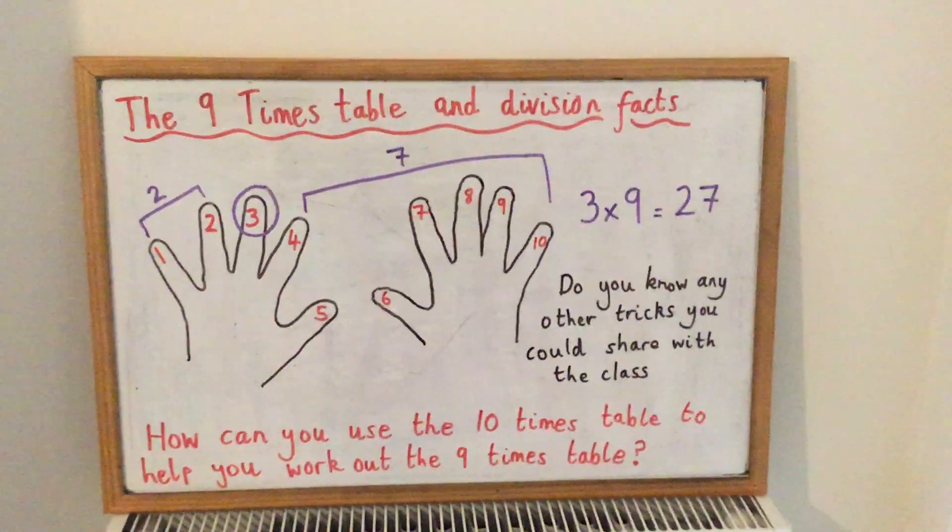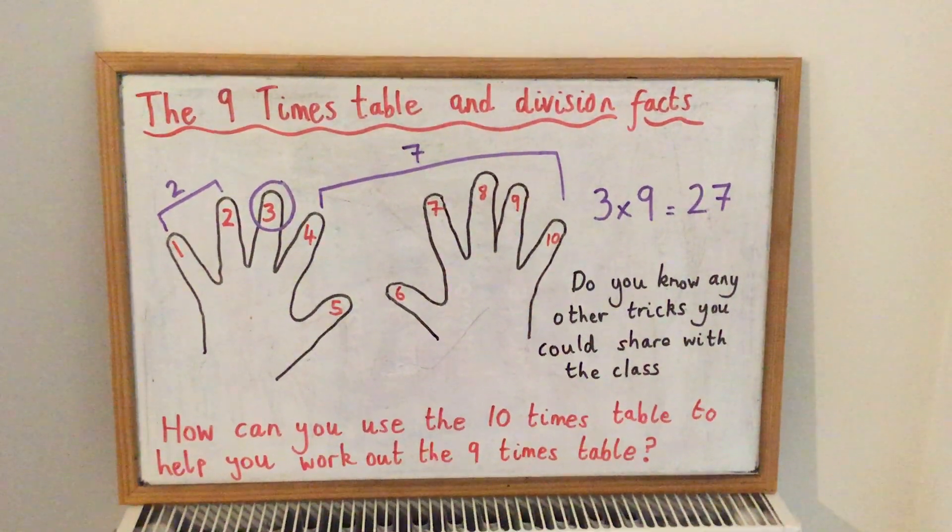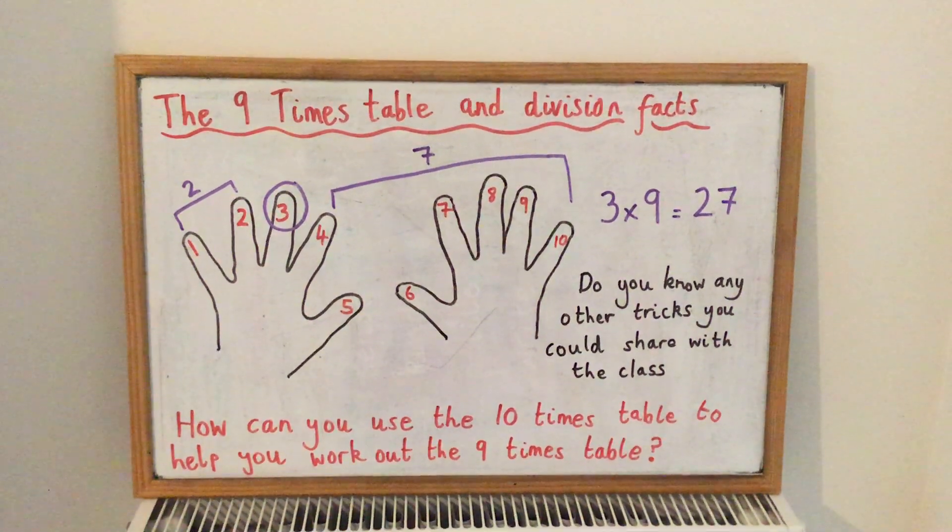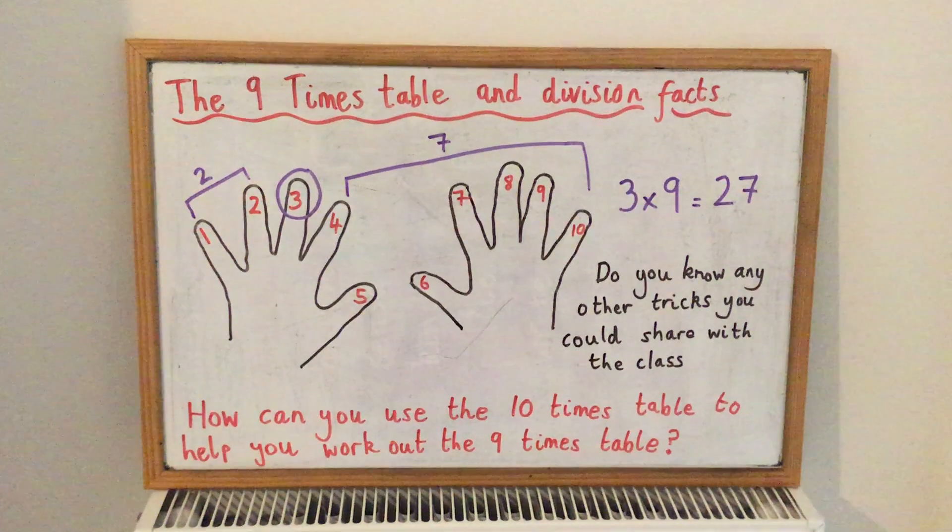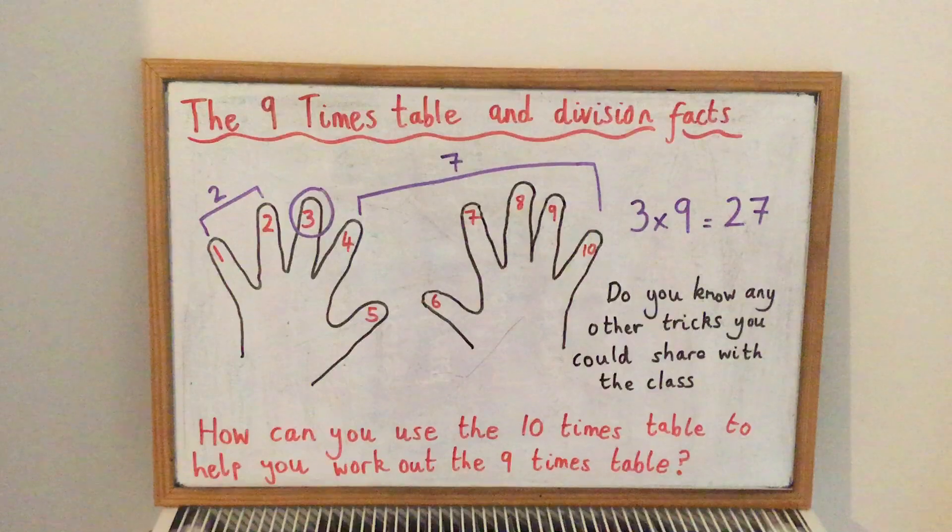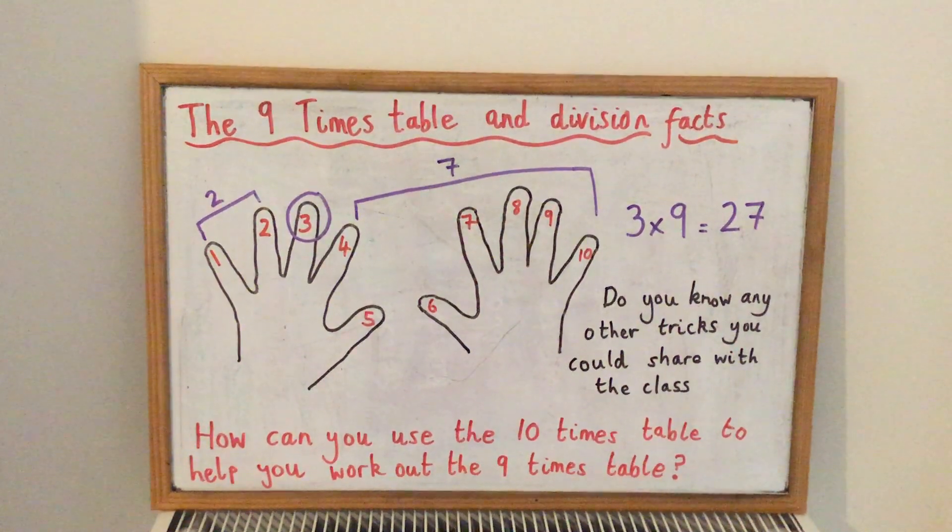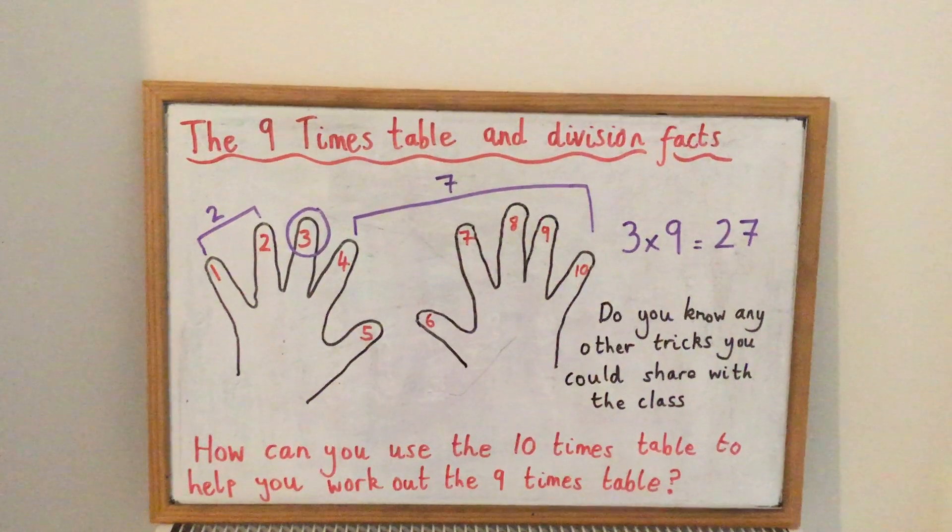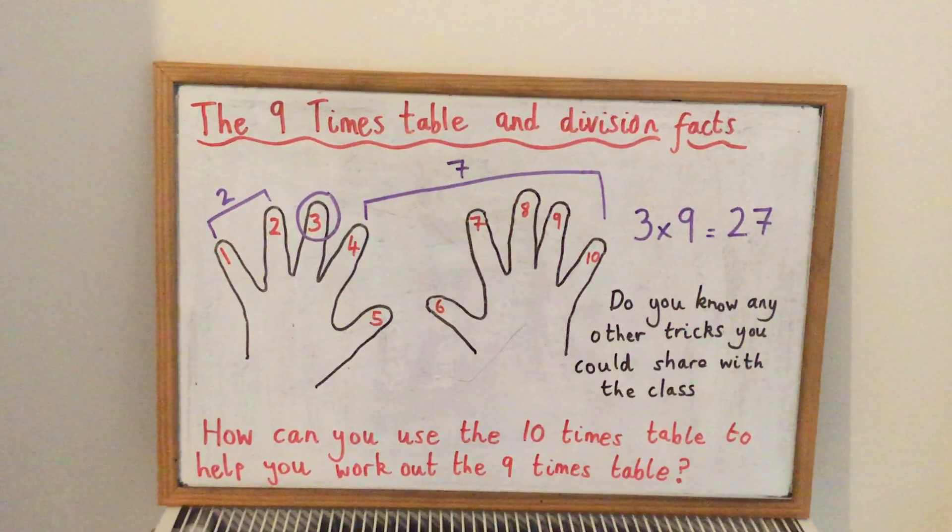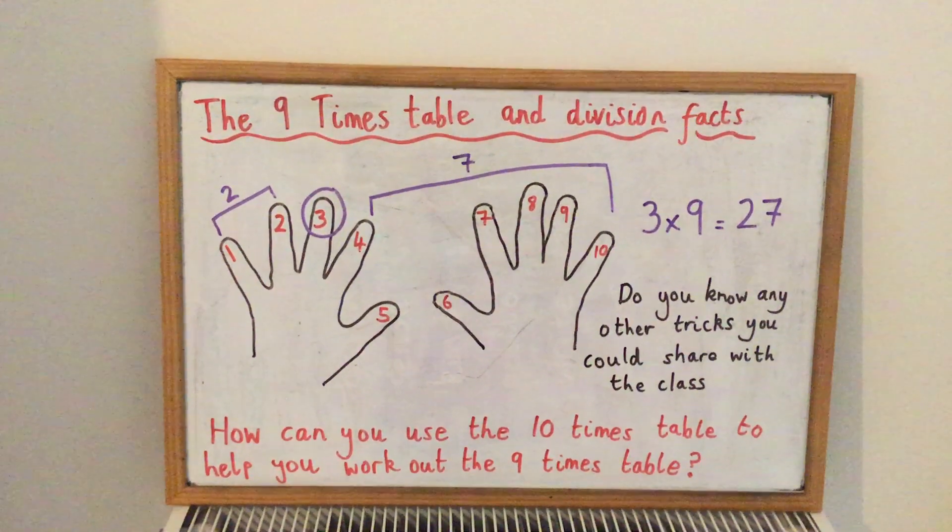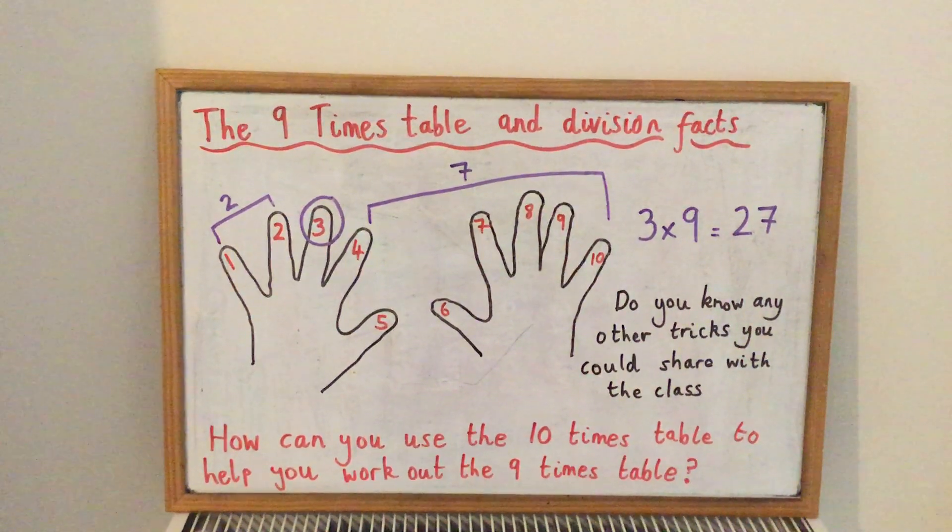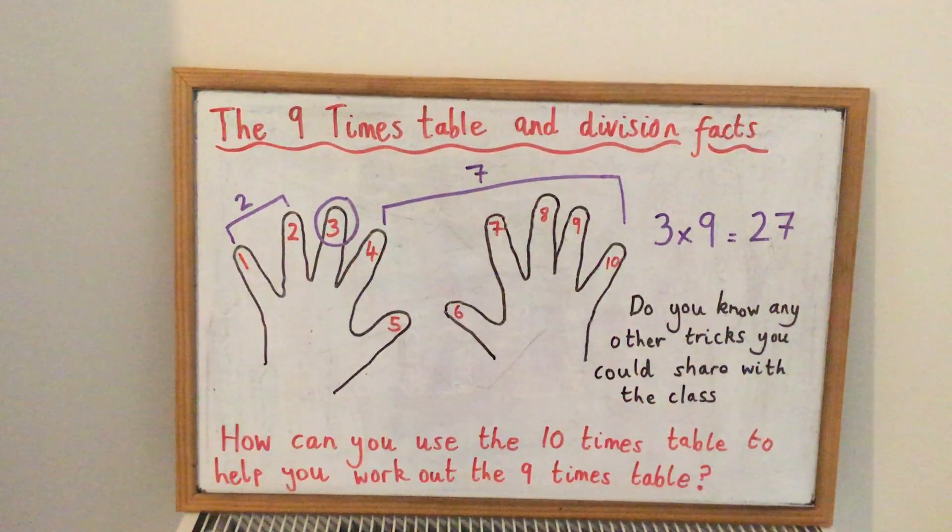So if you were given a nine times table sum, for example, three times nine and you didn't know the answer and you wanted to use your fingers to help you work it out. If you held up your hands in front of you, just like you can see on my board, and you then found your third finger on your left hand—you can see I've circled it—so we're doing three times nine, that's the third finger I need to find. If you then put that finger down and keep all the others up, this should give you the answer.